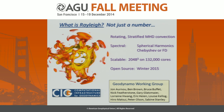I'm going to be talking about an open source code developed over the last almost two years through the Computational Infrastructure for Geodynamics at UC Davis by myself and the GeoDynamo Working Group, which includes John Arnaud, Ben Brown, Bruce Buffett, Gary Glatzmeyer, Lorraine Huang, Eric Hyen, Louise Kellogg, Hiramatsui, Peter Elson, and Sabine Stanley.